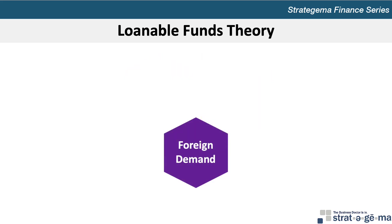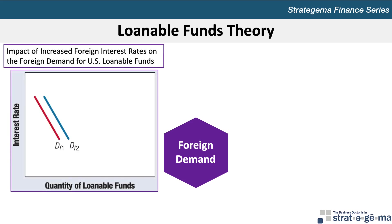The demand for loanable funds in a given market also includes foreign demand by foreign governments or corporations. All else equal, a larger quantity of U.S. funds will be demanded by foreign governments and corporations if their domestic interest rates are high relative to U.S. rates. The foreign demand curve can shift in response to economic conditions — for example, if foreign interest rates rise, foreign firms and governments will likely increase their demand for U.S. funds, as represented by the shift from DF1 to DF2.